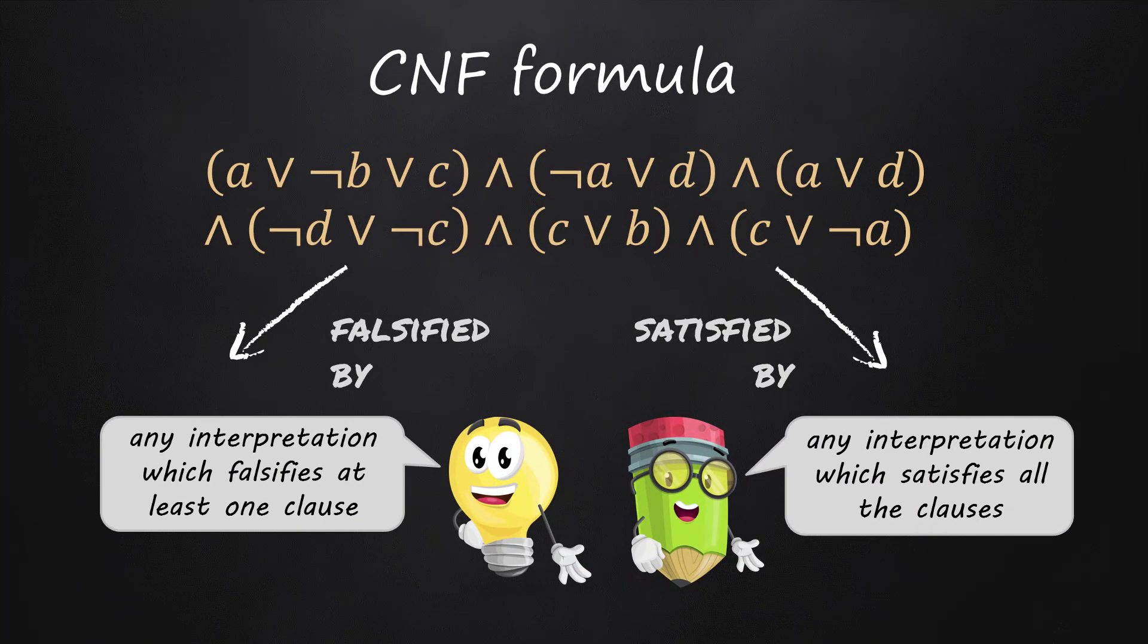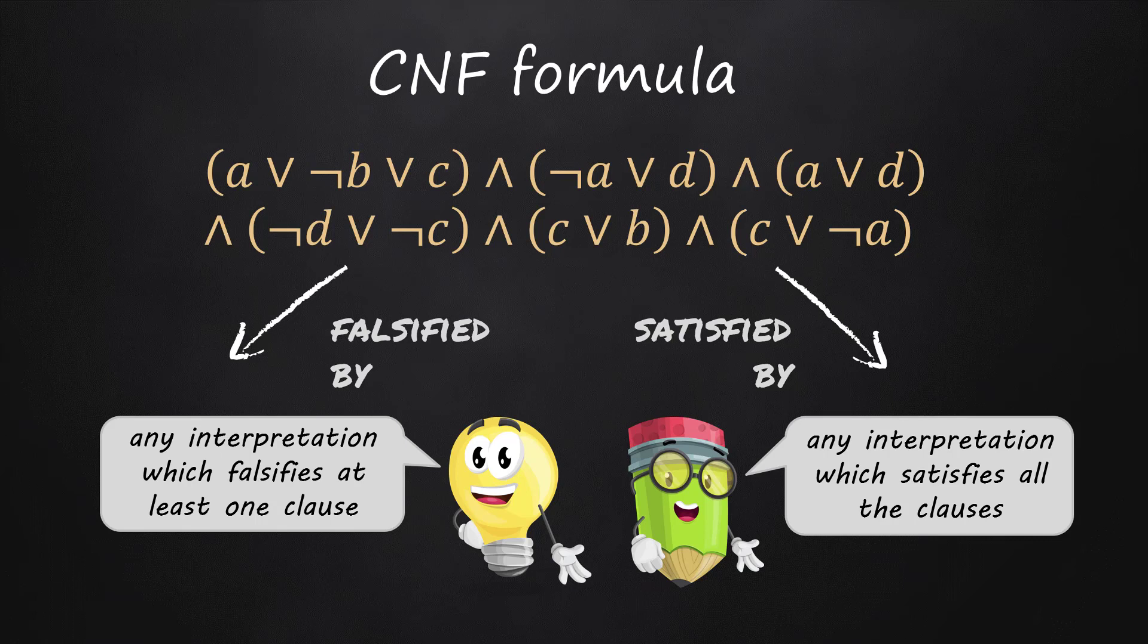A conjunctive normal form formula, CNF formula for short, is a conjunction of clauses, namely either one clause or several clauses connected by logical and operators.